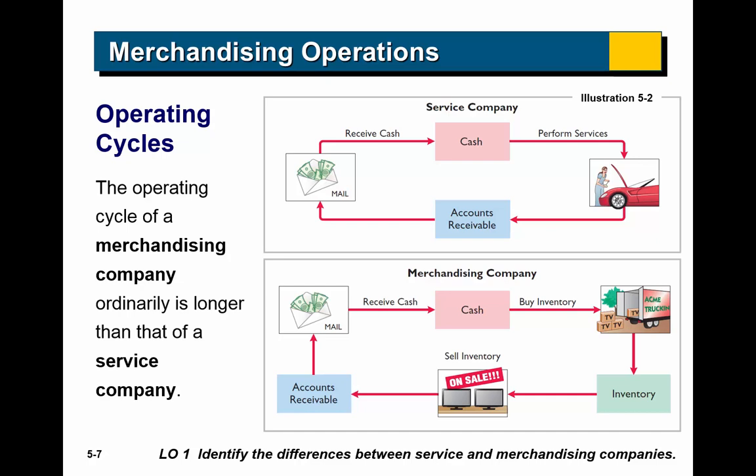The operating cycle of a service company is: start with cash, perform services, then have an accounts receivable if the customer didn't pay cash, then receive the cash and be back to cash again. With a merchandiser there's an extra step — we take our cash and buy inventory. The inventory sits on the shelves, then people purchase it, creating an accounts receivable if they don't pay cash, then we collect and have cash again. That extra step of having inventory is important — if you buy inventory and can't sell it, you've spent the cash but have nothing to show for it. So it's important to sell it in a timely manner.